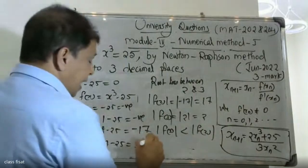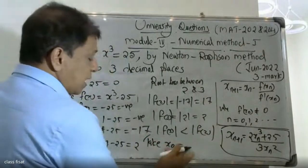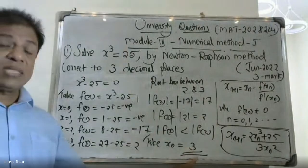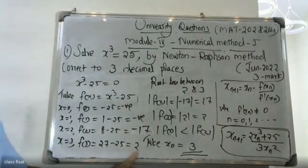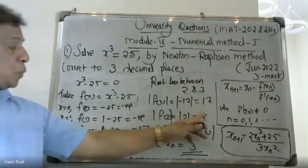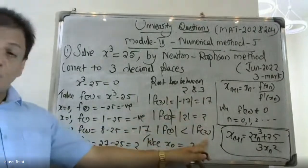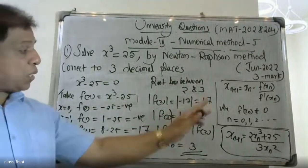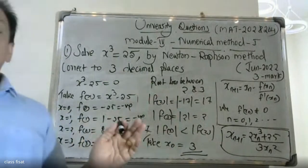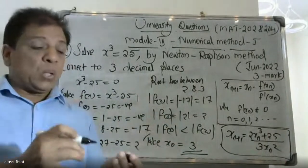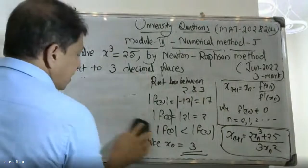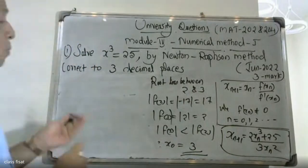Since modulus of f(3) is less than modulus of f(2), we take x₀ equal to 3 as our starting point. f(2) is negative and f(3) is positive, confirming the root lies between them. We select x₀ equal to 3.